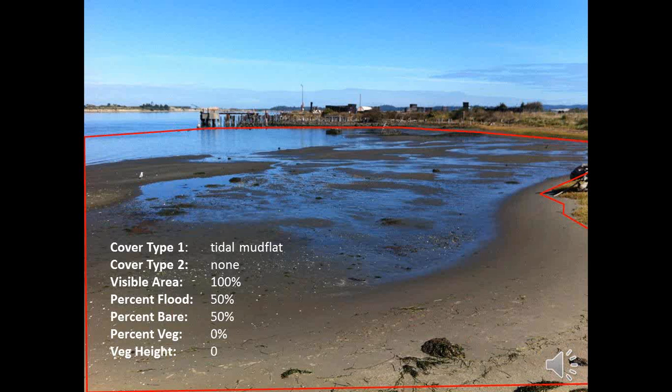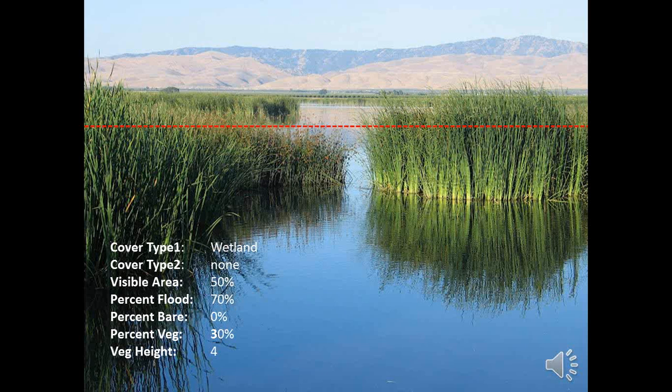Here is an example of a survey area in a coastal estuary denoted by the red polygon. Within this polygon, we can see 100% of the survey area from our vantage point. The dominant cover type is tidal mudflat, which comprises 80% of the survey area, so only one cover type is recorded. About 50% of the visible survey area is flooded, and 50% is bare mud, with no vegetation. In another example from a managed wetland, the survey area boundary extends past tall vegetation. Thus, tall vegetation obstructs our view and we can only see about 50% of the survey area. Of the area we can see, 70% is flooded, 0% is bare ground, and 30% is vegetated. You can practice more with survey area conditions by looking up different images on the internet.